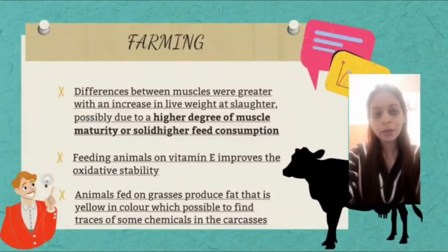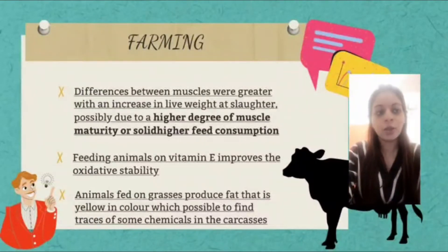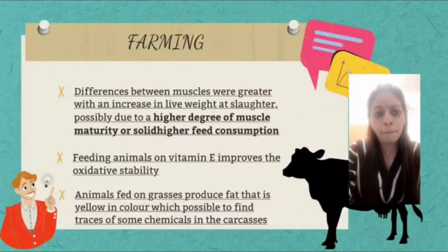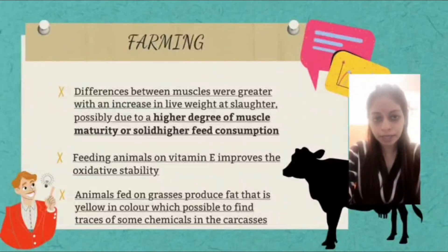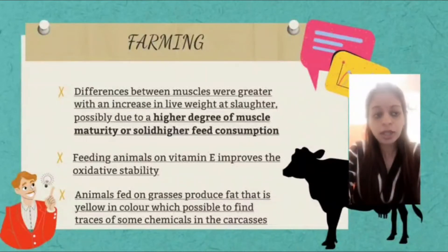Moving to the next slide, which covers farming. Differences between muscles were greater with an increase in live weight at slaughter, possibly due to a higher degree of muscle maturity or solidified feed consumption. Feeding animals on vitamin E improved the oxidative stability. Also, animals fed on grasses produce fat that is yellow in color, which makes it possible to find traces of some chemicals in the carcasses.